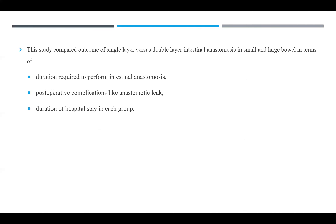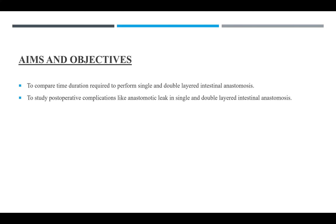This study compared the outcome of single-layer versus double-layer intestinal anastomosis in small and large bowel, in terms of duration required to perform intestinal anastomosis, postoperative complications like anastomotic leak, and duration of hospital stay in each group. The aims and objectives were to compare time duration required to perform single and double-layer intestinal anastomosis and to study postoperative complications such as anastomotic leak in each group.